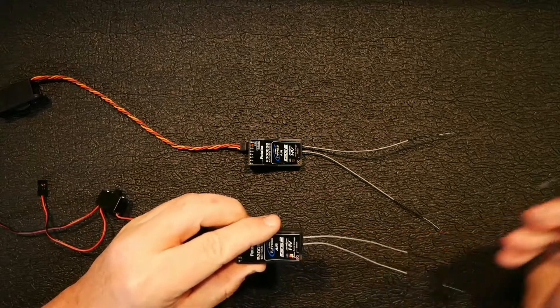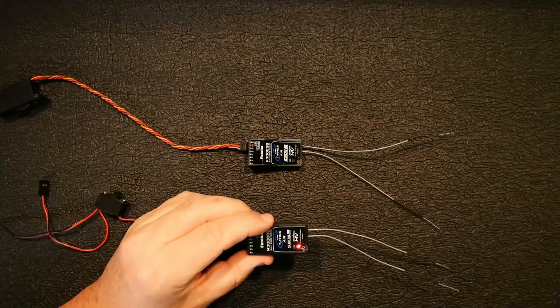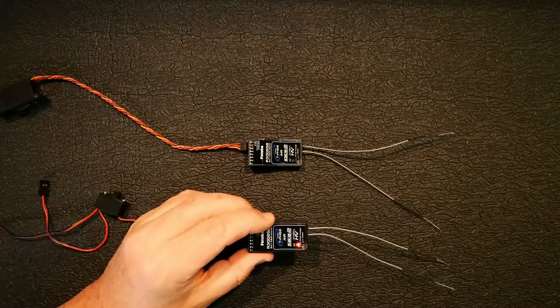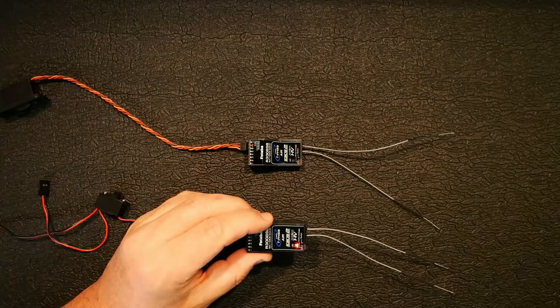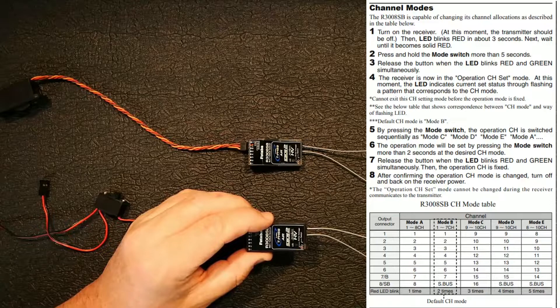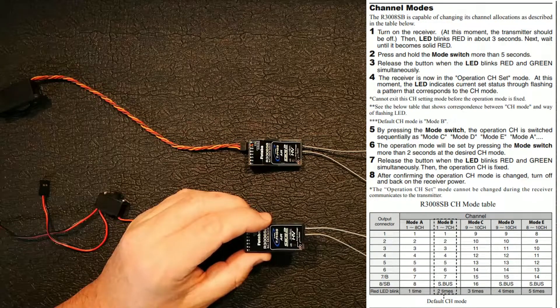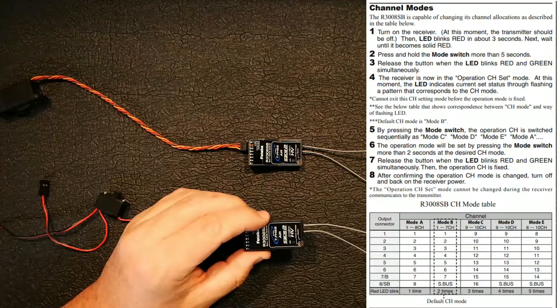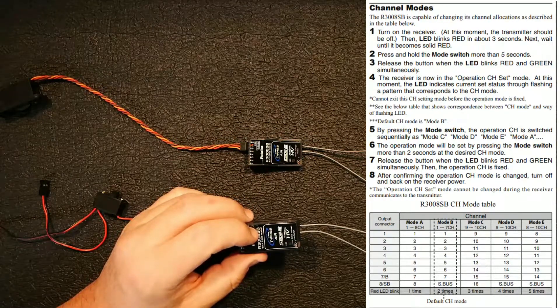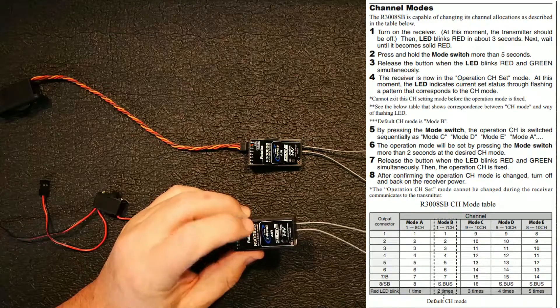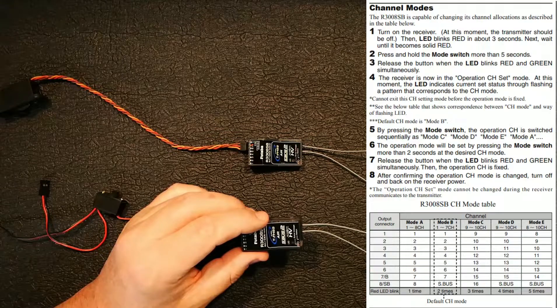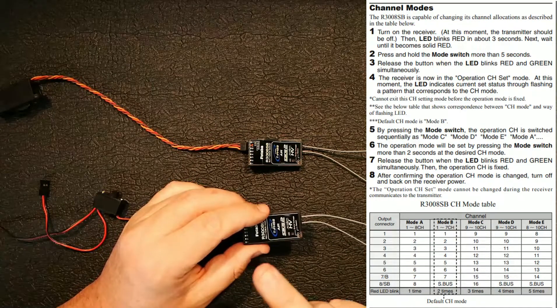There we go. Now when you release it, the number of times that it blinks, that's the mode that you are in. So you have to know, I'll put a little snippet up of the manual here, but you have to know what mode you want to run. You could have mode A which would be channels one through eight on this receiver. Mode B would be channels one through seven and your eighth channel will be S-bus, and that'll have to be two flashes.